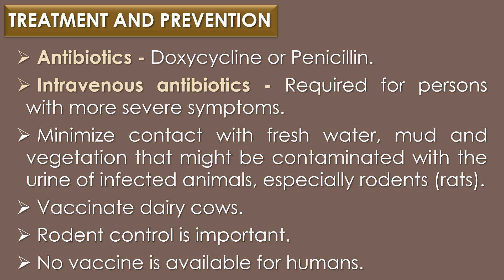Treatment and Prevention: Leptospirosis is treated with antibiotics such as doxycycline or penicillin, which should be given early in the course of the disease. Intravenous antibiotics may be required for persons with more severe symptoms. Contact with fresh water, mud, and vegetation that might be contaminated with the urine of infected animals, especially rodents, should be minimized. Vaccinating dairy cows and rodent control are important preventive measures. No vaccine is currently available for humans to control Leptospira introgons infection.